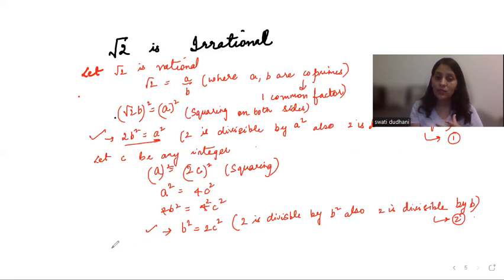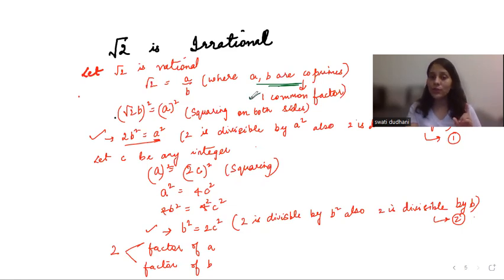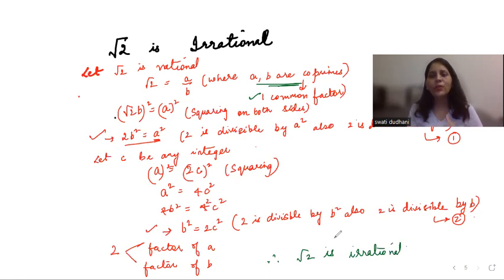Using these two results, 2 is a factor of a and 2 is a factor of b. But we assumed that a and b are co-primes, which have only one common factor — the number 1 itself. Here we have more than one common factor, which contradicts our assumption that root 2 is rational. Therefore root 2 is irrational.